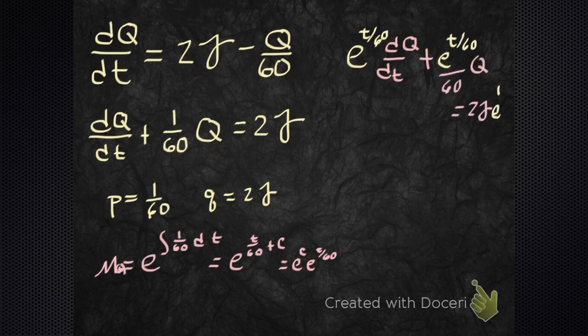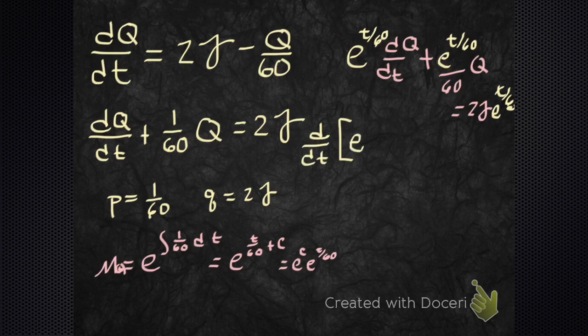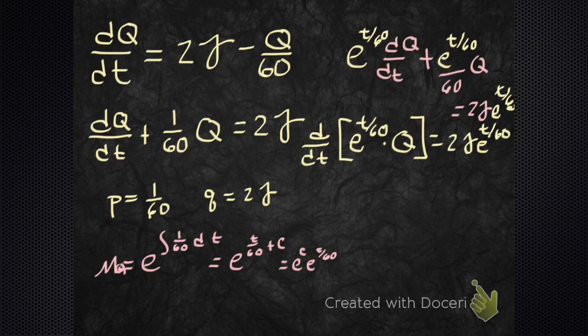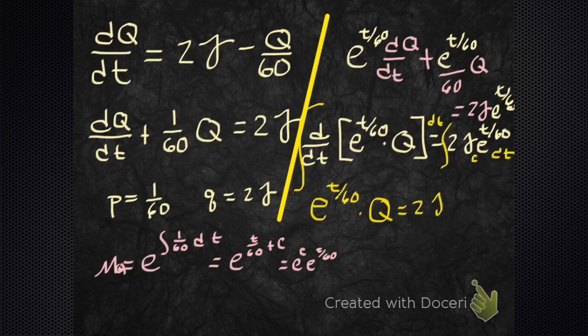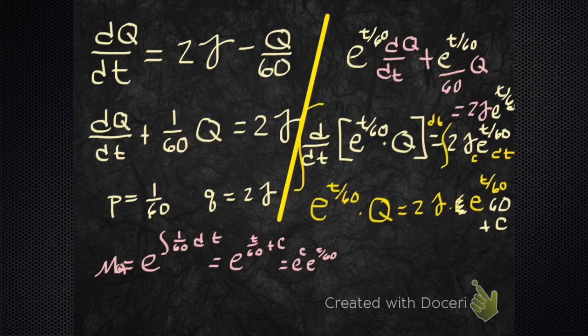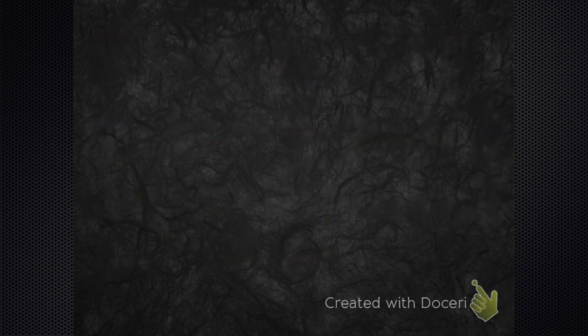Then what? You undot that left-hand side. It's Q times mu every time. And now we integrate each side. So integrating each side, we see that the left side has that integrand using that fundamental theorem of calculus. And that right side quite messy - that says 2 times gamma e to the t over 60 times 60, because we're integrating that, plus our C.